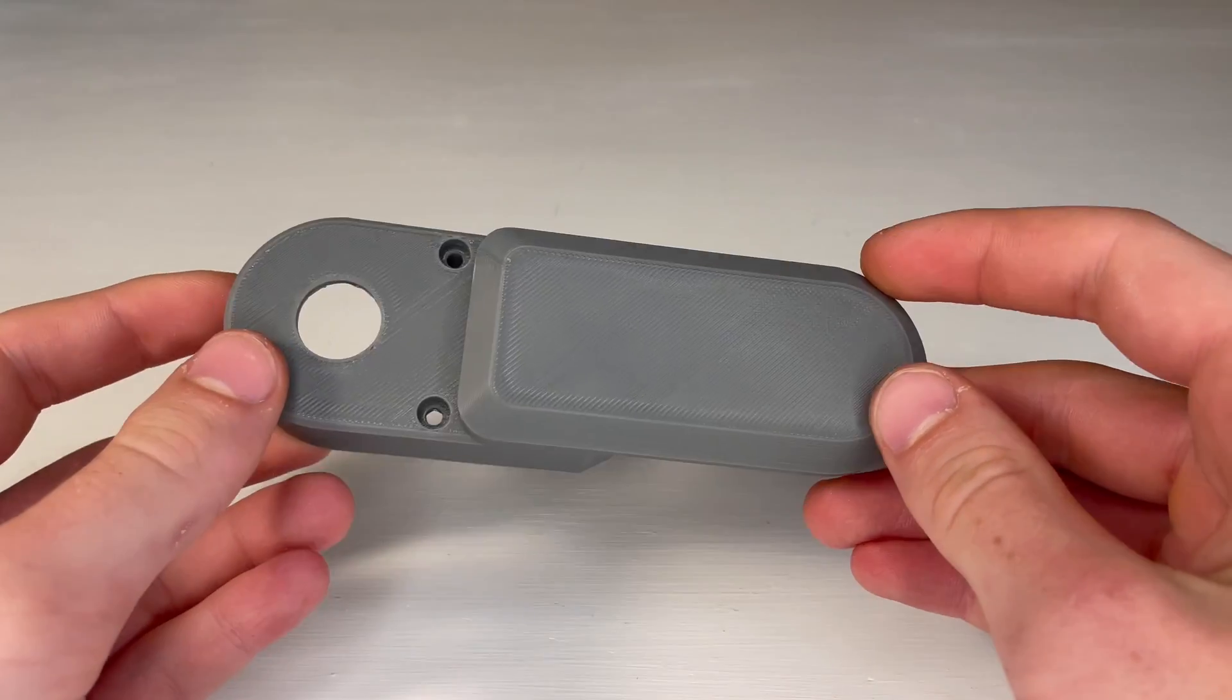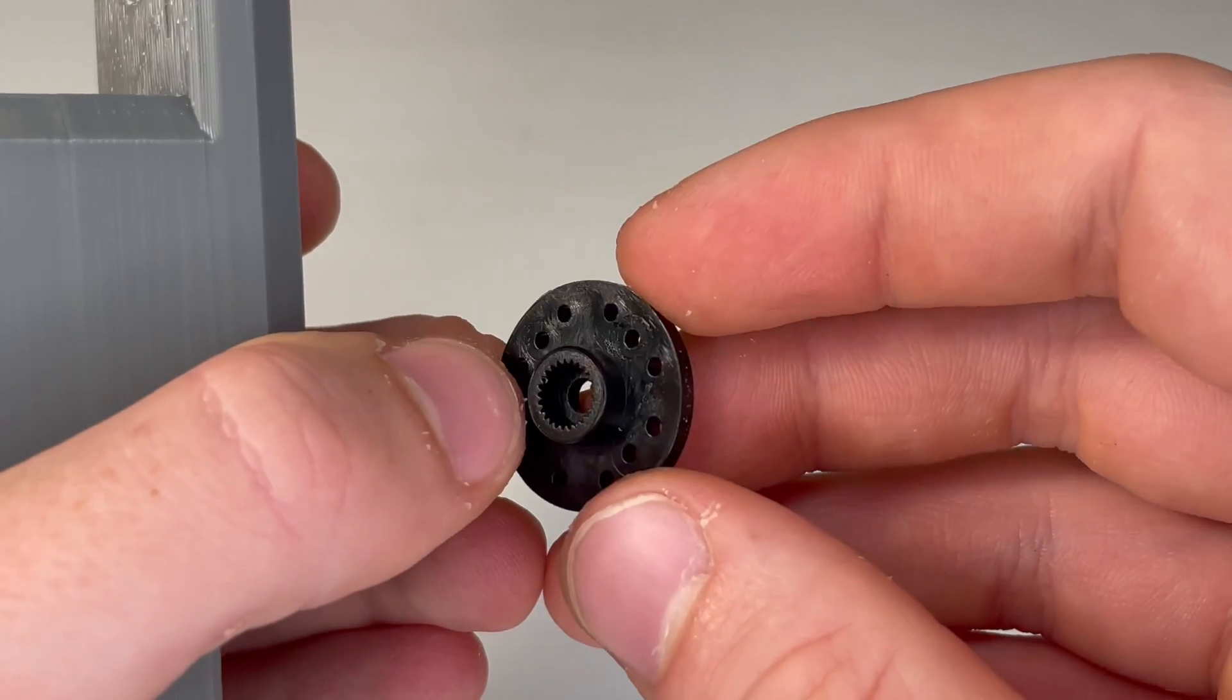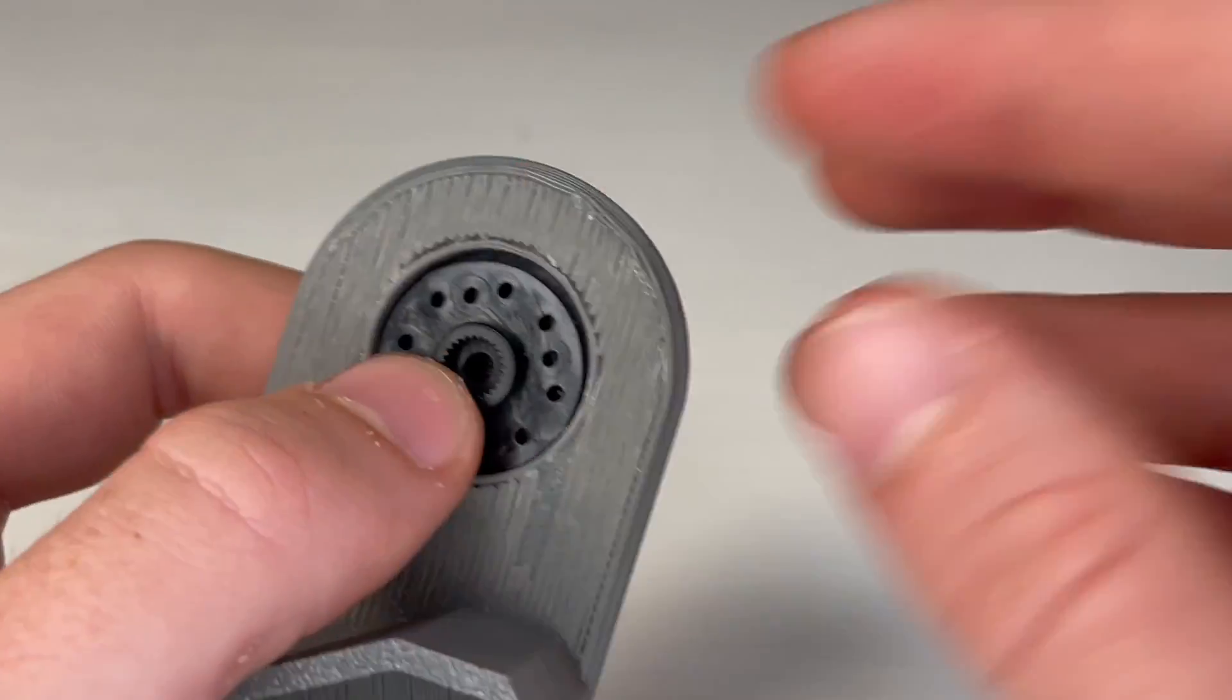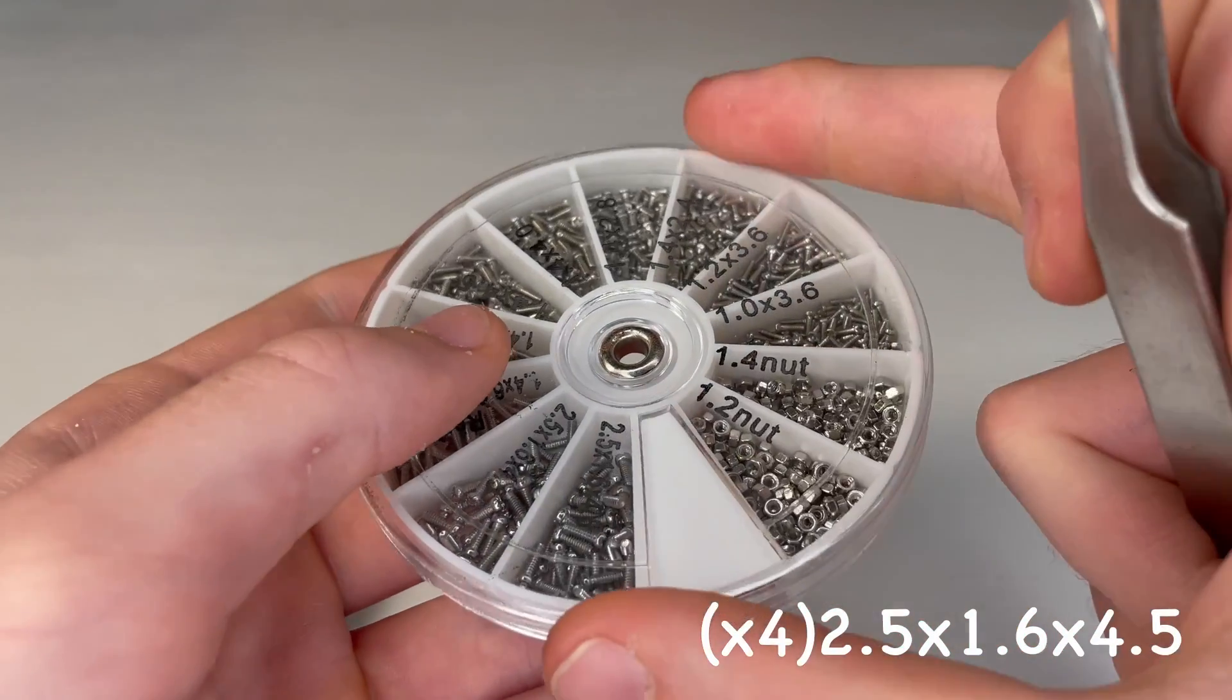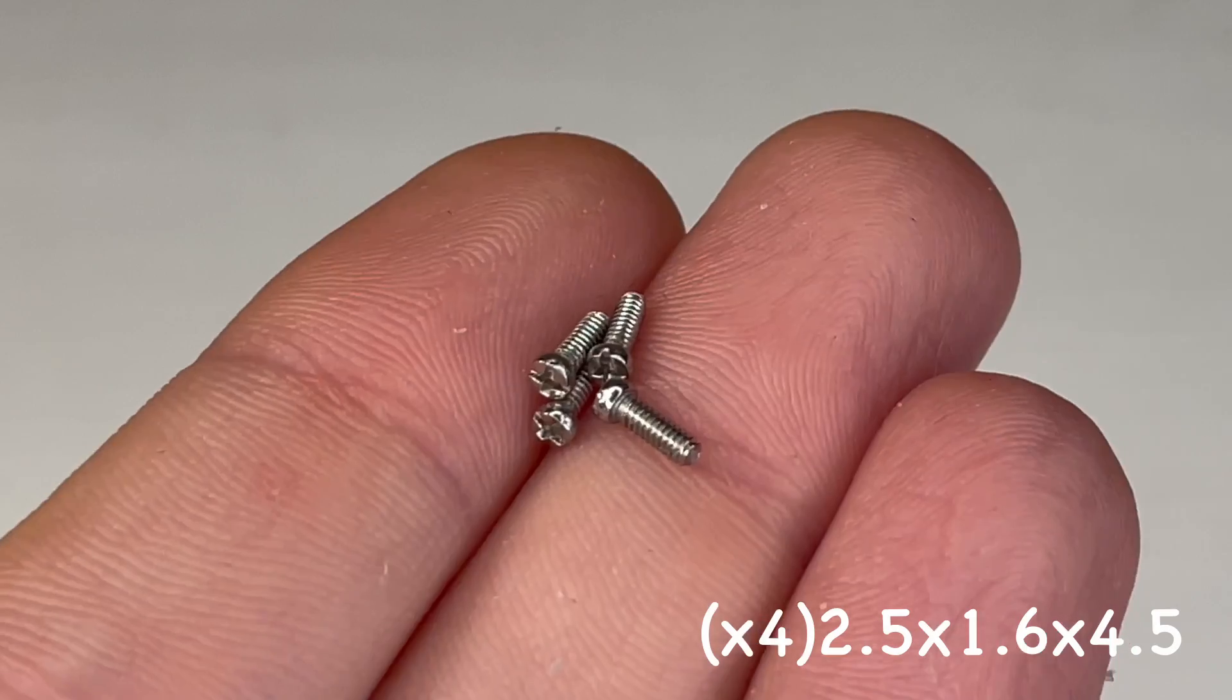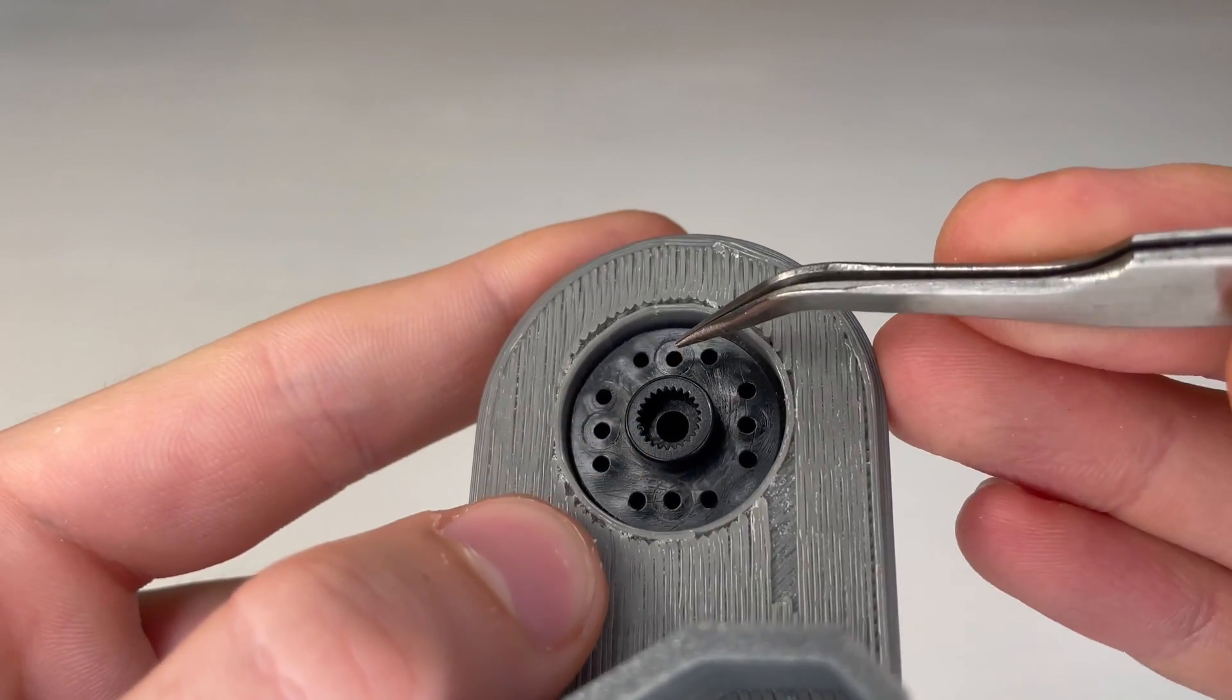Now we'll be using this main arm piece. And we'll use another one of those circular servo horns. And we'll need four of the screws shown on screen. And these four screws will be screwed in across from each other.